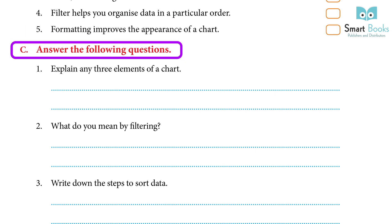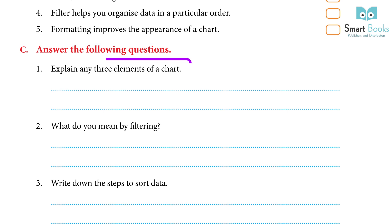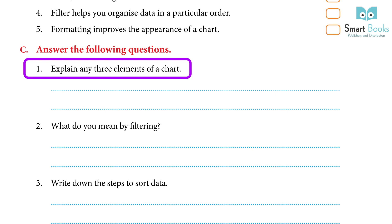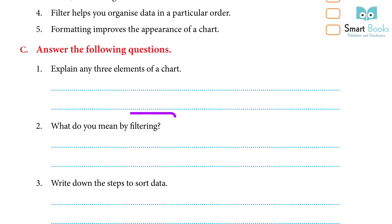C. Answer the following questions: 1. Explain any three elements of a chart. Answer — Elements of a Chart: 1. Chart Area: all the area and other objects of a chart are included in the chart area. 2. Data Series: consists of the bars, slices, lines, or additional elements that show the data values. 3. Legend: colors, patterns, or symbols assigned to the data series are depicted by legends.